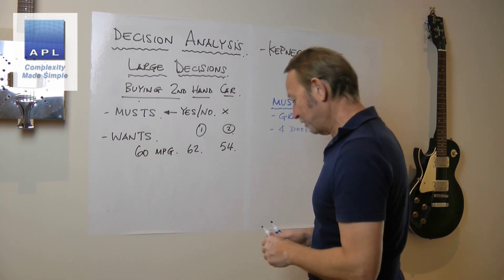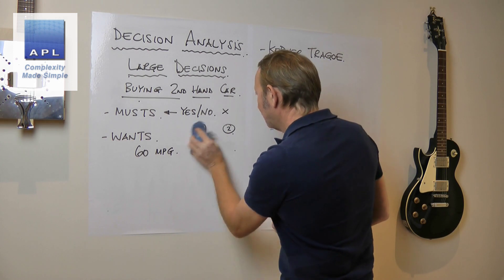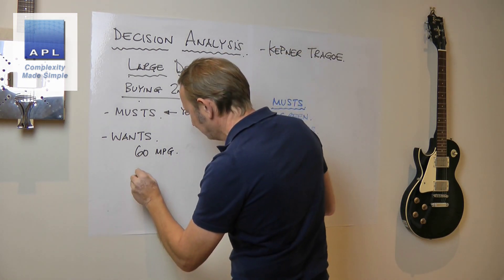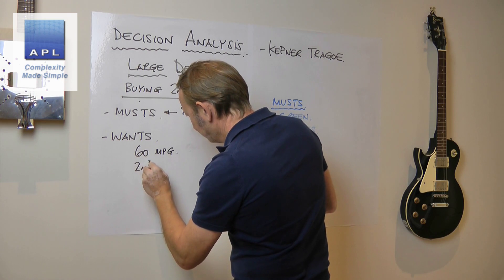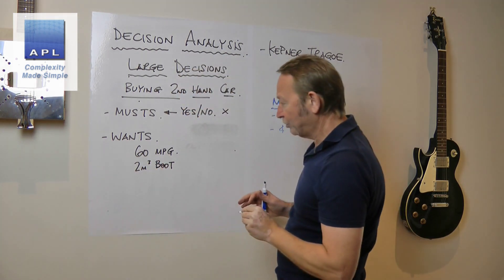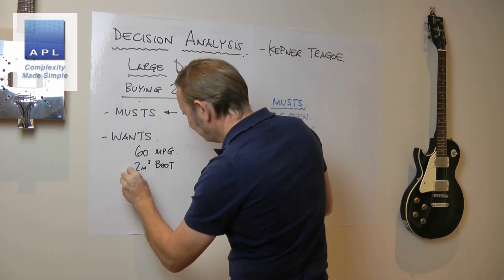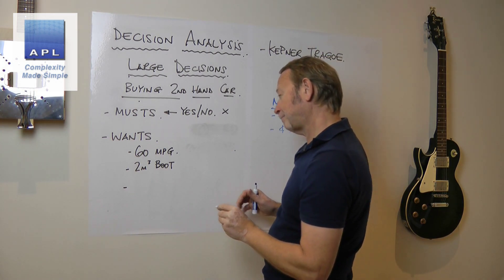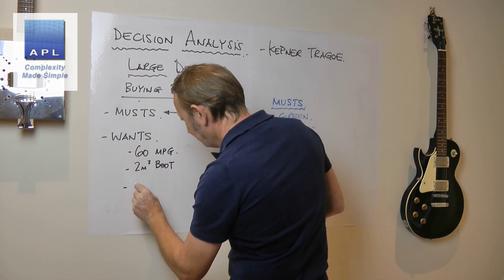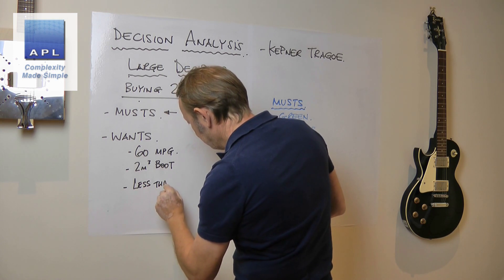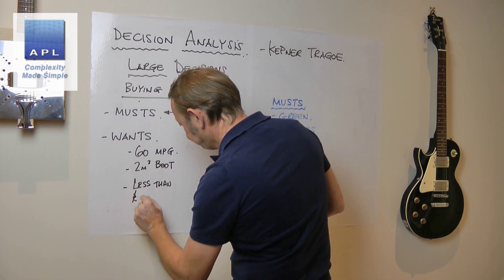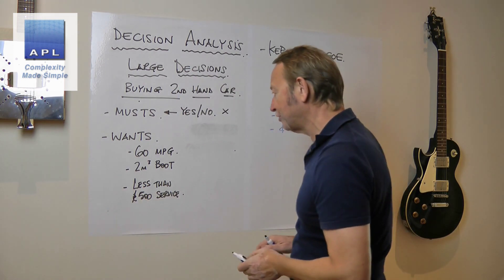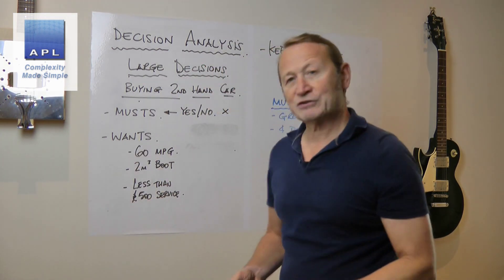So we list the wants: 60 miles to the gallon, a certain amount of cubic meters in the boot, and less than 500 pounds for the annual service. I've got those three wants.